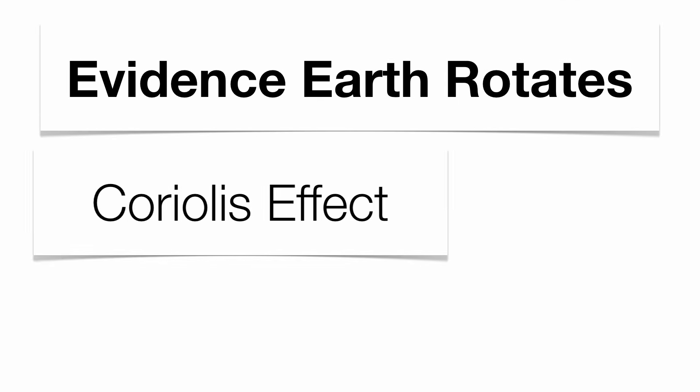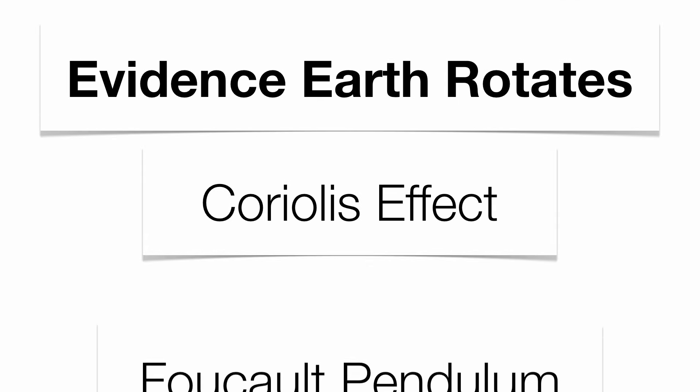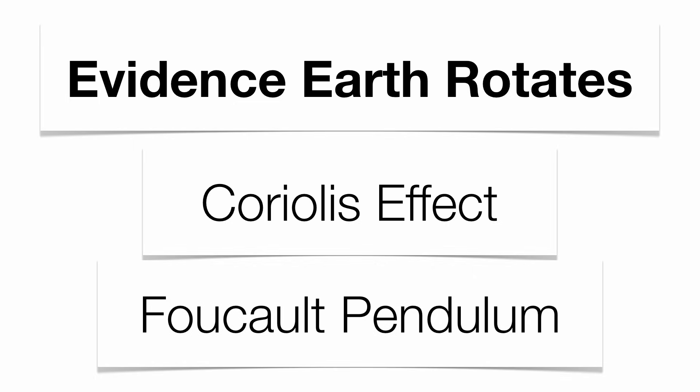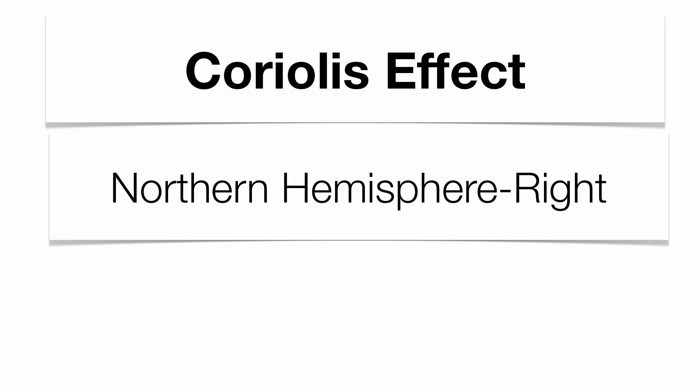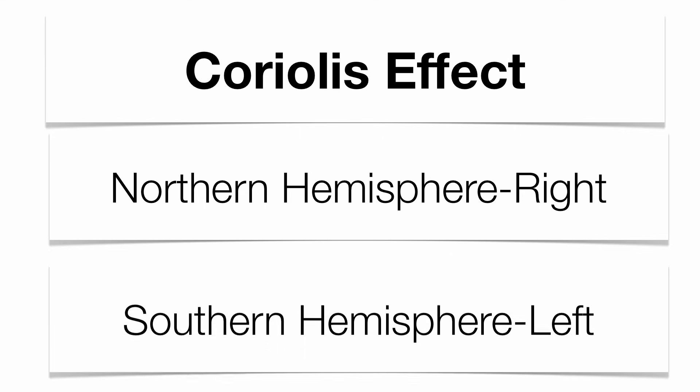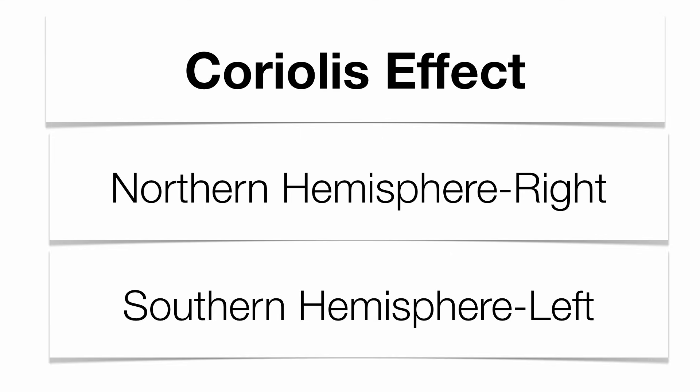There are a couple pieces of evidence to support the idea that the Earth rotates: one is called the Coriolis effect, and the other is called the Foucault pendulum. The Coriolis effect was named after Gaspard Coriolis. He came up with the idea that anything fluid — our ocean currents and wind currents — will have some sort of deflection due to our rotation. In the northern hemisphere, things get deflected to the right; in the southern hemisphere, things get deflected to the left.